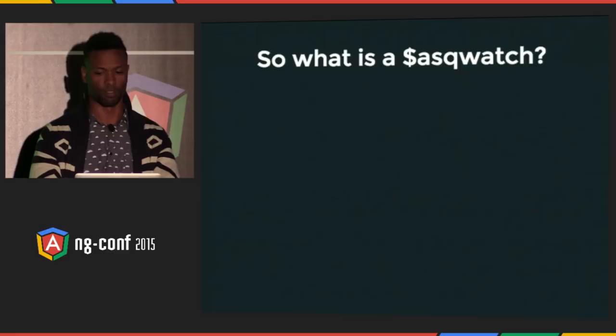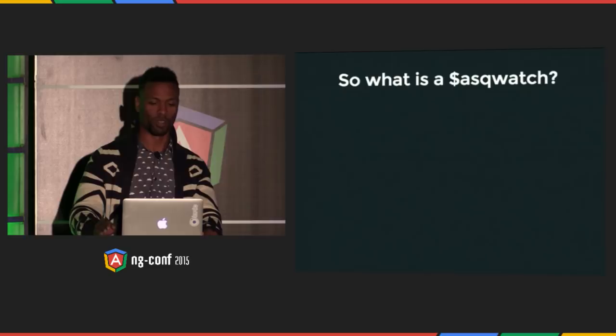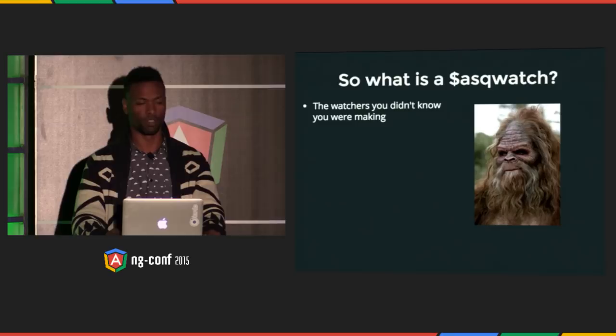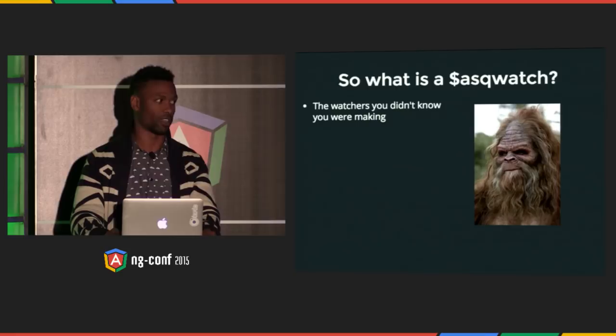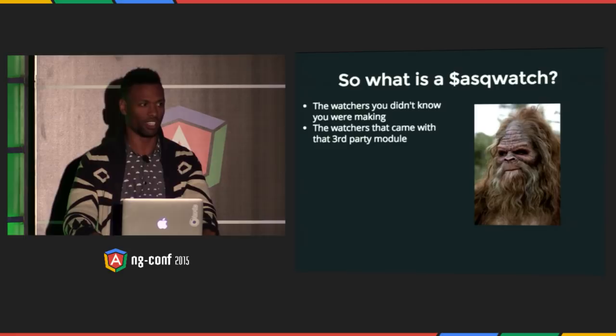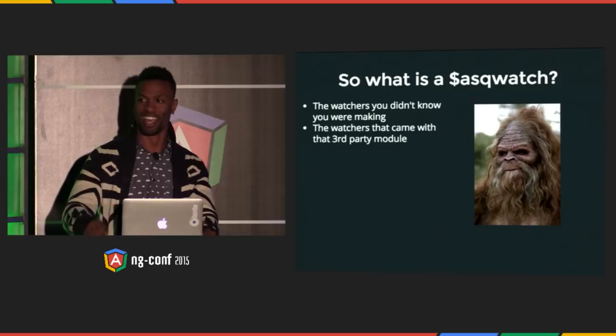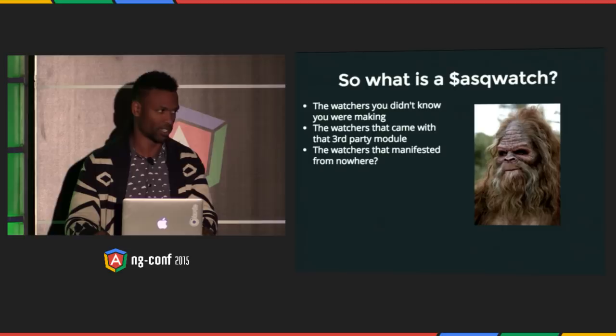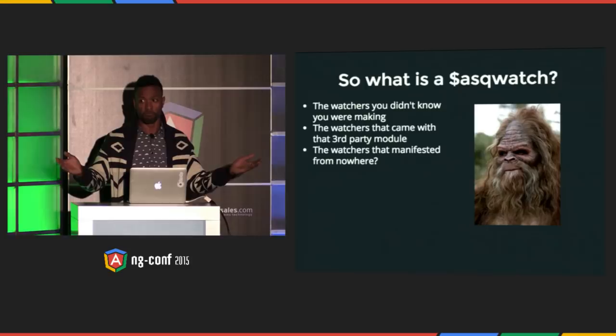So finally — everybody's been asking me for months — what is a Sasquatch? In Angular, a Sasquatch is the watchers you didn't know you were making. You're making a whole bunch of them and you don't even know it. Or maybe you do know and you don't care. It's the watches that came with a third-party module — you download it and it's watching everything in your app. The watchers that manifested from nowhere — you didn't even write any JavaScript yet, didn't download a third-party module, but somehow there are watches already there. That's a Sasquatch.